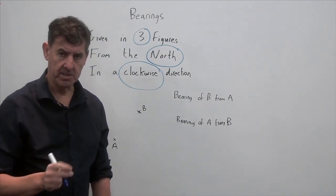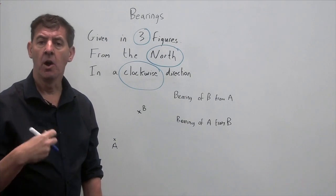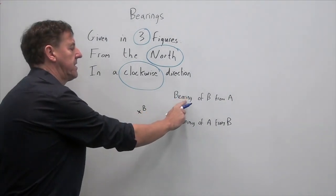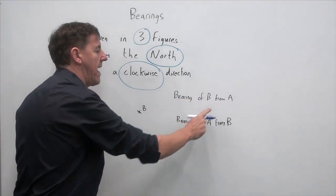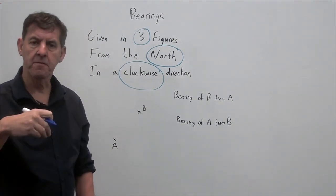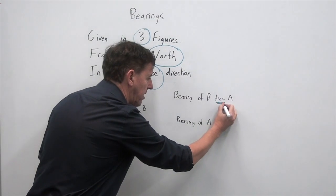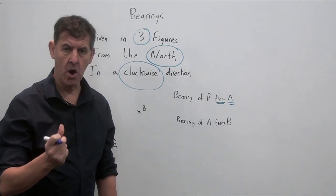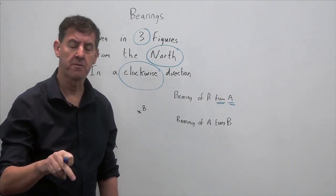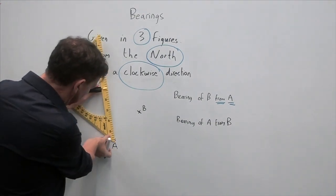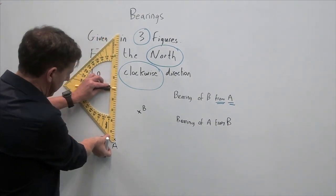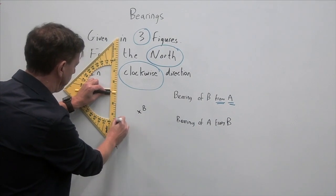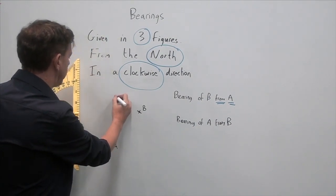What you must be competent at being able to do before you access this lesson is to be able to obviously measure angles. So look at this question here, I'm looking at calculating the bearing of B from A. The key word is where you are coming from. It definitely states I'm coming from A. So what's the first thing I must do is I must draw a north line on the letter A because I'm coming from A. So I take a ruler here, straighten myself up and I'm now going to draw myself a north line.